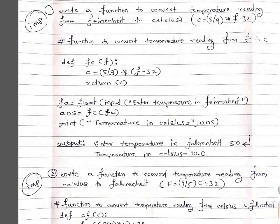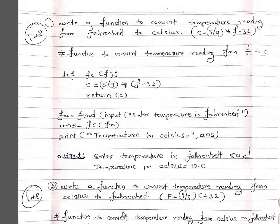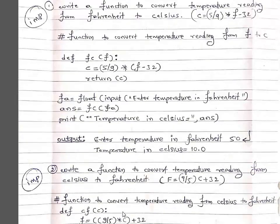There is also a function to convert temperature from Fahrenheit to Celsius, already explained in the last class. It takes Fahrenheit as input, converts to Celsius, and gives the result back — this is a fruitful function. Another function converts from Celsius to Fahrenheit using the formula: read Celsius, pass it, convert to Fahrenheit, and print the result. These are important programs — if you refer to old question papers you will find questions on these, so please practice them.